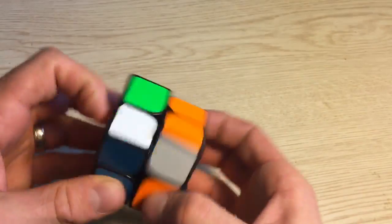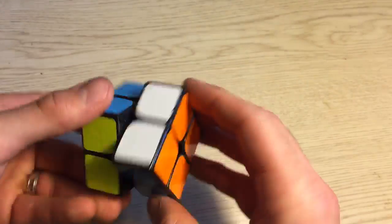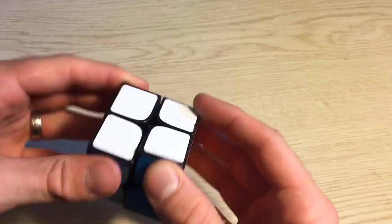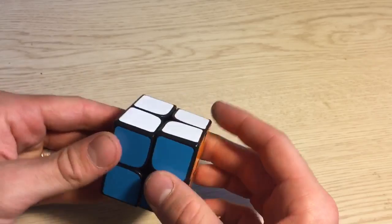I understood on a 3x3 you had a bunch of pieces that moved around each other, but a 2x2 just didn't seem like it had enough pieces. Well, how does it work?